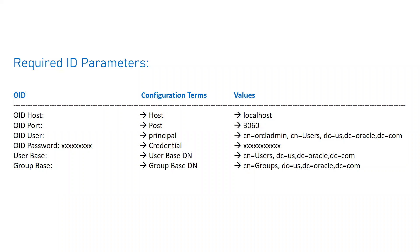The first parameter is the OID host — that is the DNS name or IP address of the host where your external OID or LDAP server is running. In the WebLogic console configuration, inside the Host field, you define the IP address or DNS of that host. In my case, since my OID is running on my local machine, the value is 'localhost'.